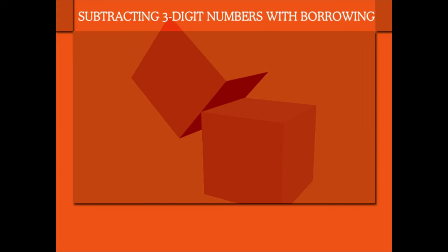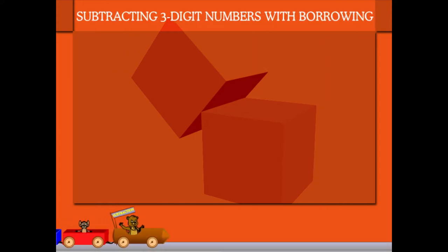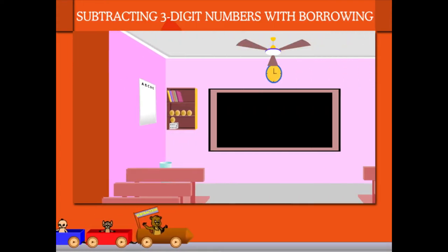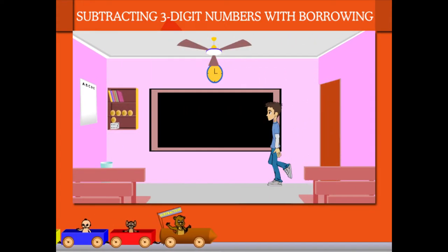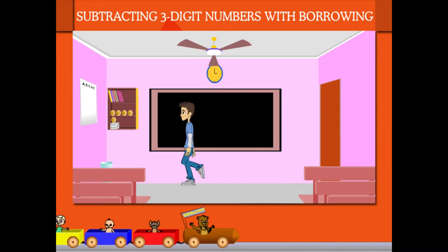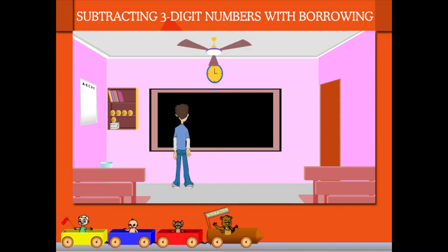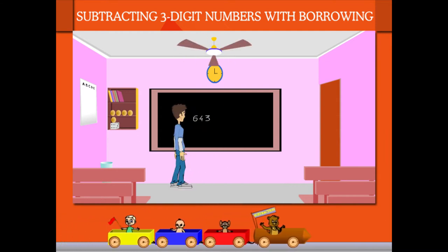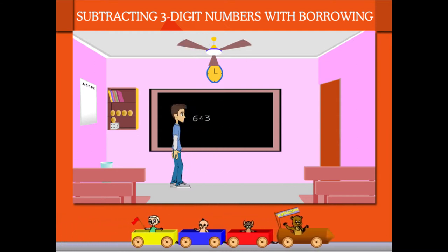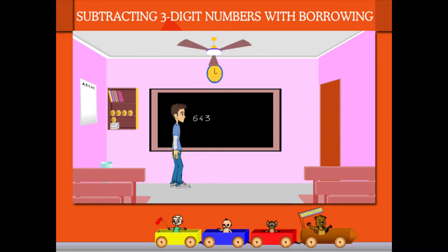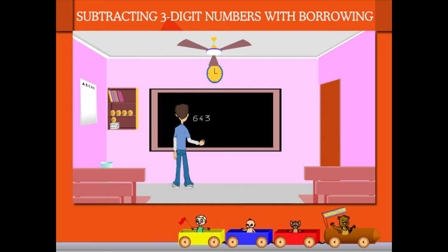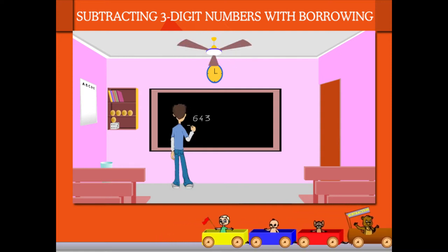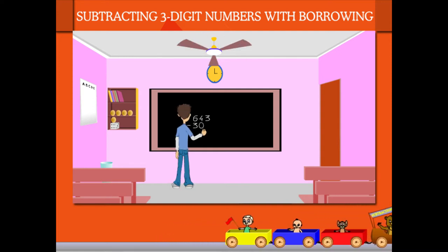Subtracting 3-digit numbers with borrowing. Sammy is in the class with the number 643 on the board. From this, he has to subtract 305.